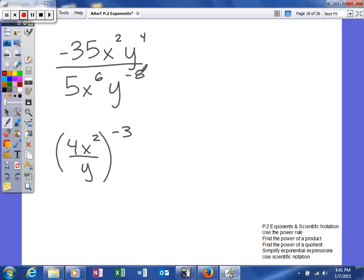Since the negative exponent only applies to this y I'm just going to take this y and move it up here. The coefficients I can go ahead and simplify so I'll say five will go into itself once, into negative 35 negative seven times. So when I do this I'll get negative 7x squared y to the fourth and now times y to the eighth. The x to the sixth is going to remain down here.